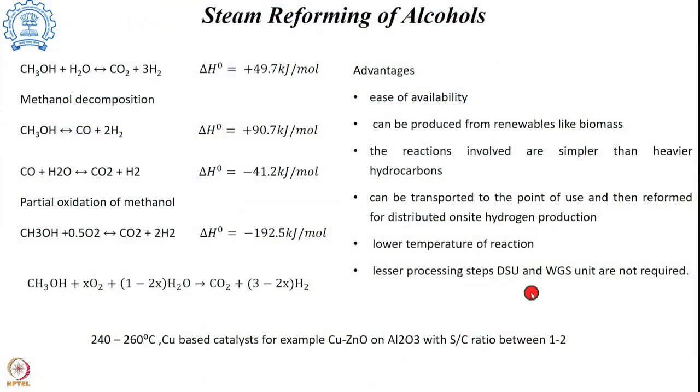Not only gaseous hydrocarbons, but liquid hydrocarbons can also undergo steam reforming to produce hydrogen. For example, methanol — there are several advantages to using methanol for hydrogen production because it is easily available and can be produced from renewables like biomass. The reactions involved in alcohol-based steam reforming are comparatively simpler than for heavier hydrocarbons. They can be transported to the point of use, reformed for on-site hydrogen production, and the temperatures involved are lower. Processing steps are also reduced because a desulphurization unit and water gas shift unit are not required in the reforming of alcohols.